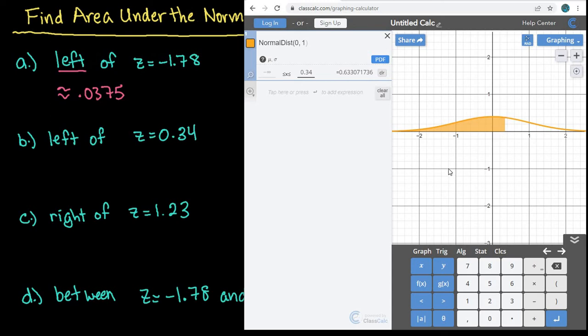So this is centered at the mean, and then I have one, two standard deviations, and so you can see that 0.34 is between 0 and 1 standard deviations above the mean, and so we would round it again to four decimal places, and so it would be 0.6331.